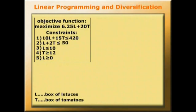So summarising the problem, we have to maximize 6.25L plus 20T, that's the objective function, subject to a number of constraints: 10L plus 15T has to be equal to or less than 420, L plus 2T has to be equal to or less than 50, L has to be equal to or less than 10, T has to be equal to or greater than 12, and L has to be greater than 0.